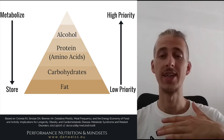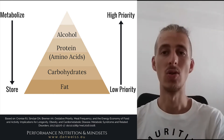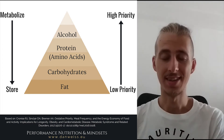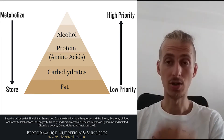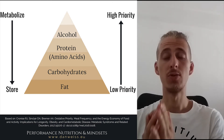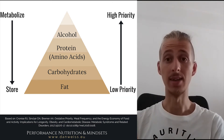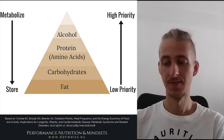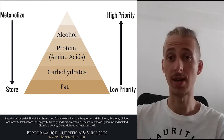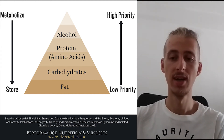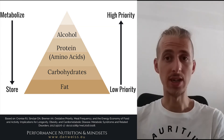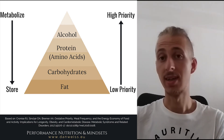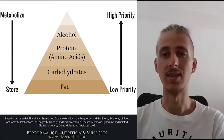Basically, the storage priority is the opposite of the oxidation priority. If I want you to take one thing from this video, it's that the body follows the path of least resistance. The least resistance is to use for energy: alcohol first, then carbs, then fats, while proteins are used for another mechanism — building blocks and such. The fat storage priority is the exact opposite: fats first, then carbohydrates, then proteins, and then alcohol — which cannot be stored.